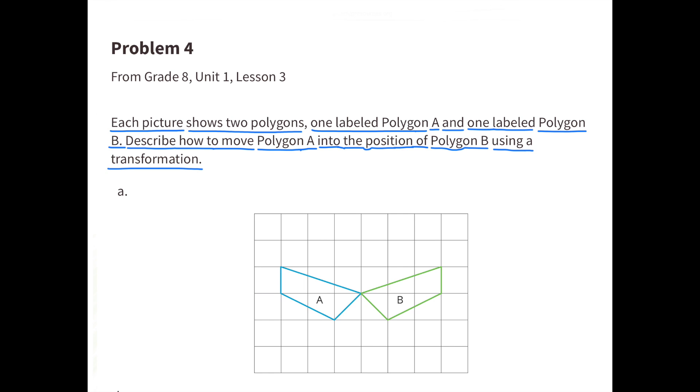Problem 4: Each picture shows two polygons, one labeled Polygon A and one labeled Polygon B. Describe how to move Polygon A into the position of Polygon B using a transformation.